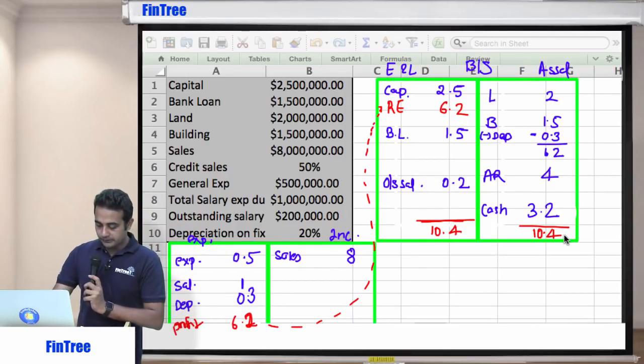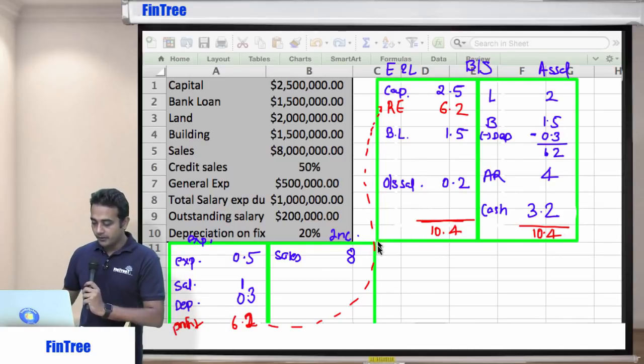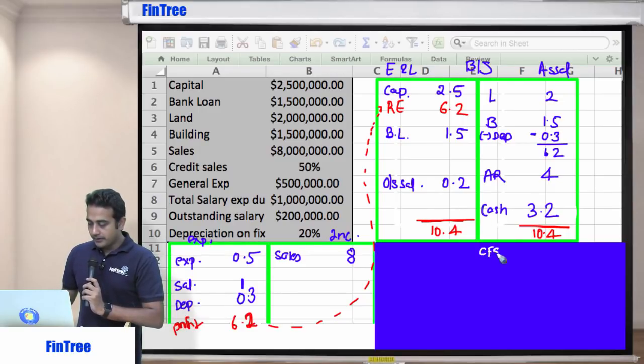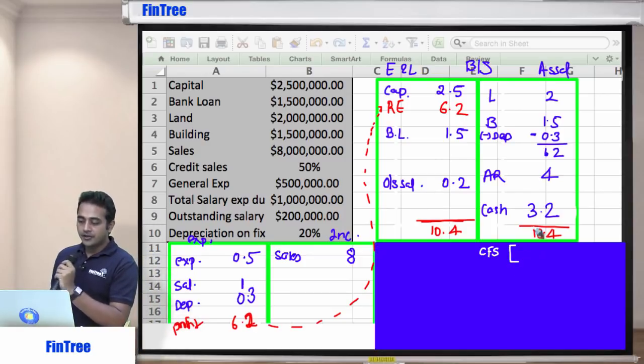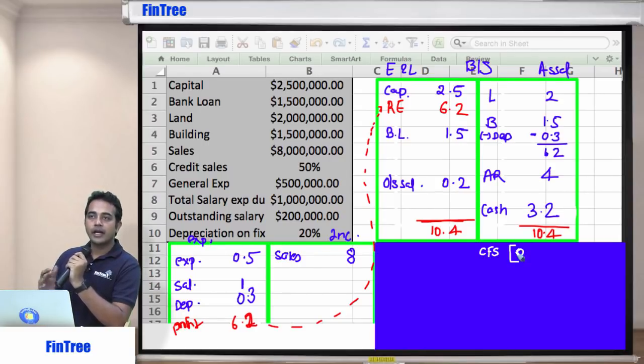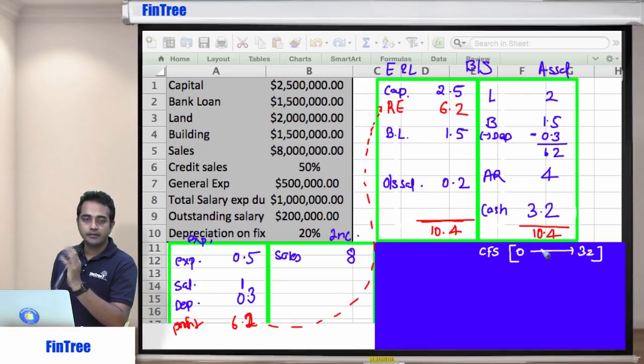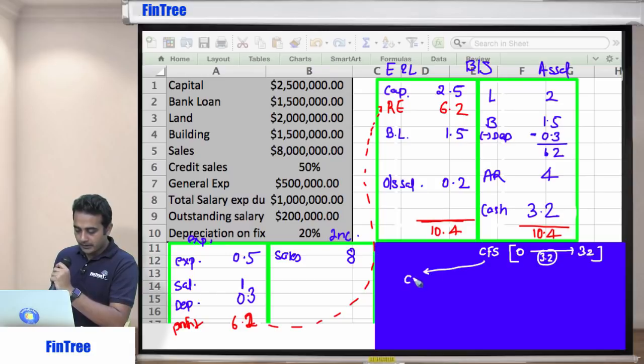So now we build the cash flow statement. Look at this carefully now. Cash flow statement. Now tell me what was the amount of cash we had at the beginning of the year? At the beginning of the year, how much cash did we have? Zero. Why? Because it's a new business. So there was no cash at the beginning of the year. At the end of the year, how much cash do we have? 3.2. So what do you think should be the total of three numbers? CFO, CFI, CFF. It is going to be 3.2. So let's start doing it. Cash flow from operations. Cash flow from investments. And cash flow from financing activities.